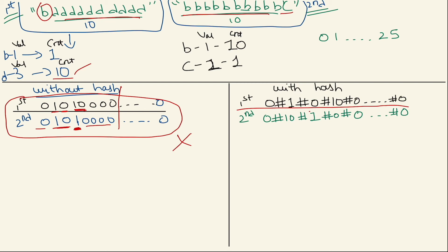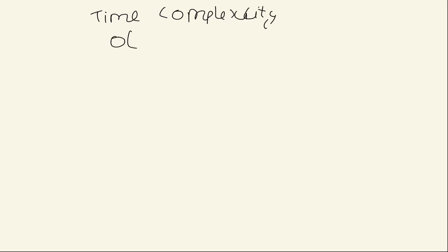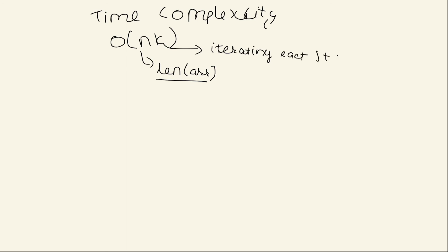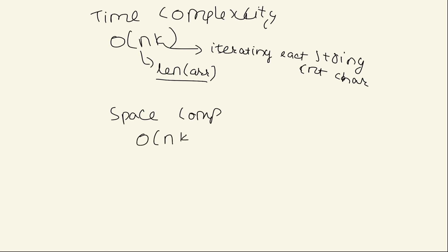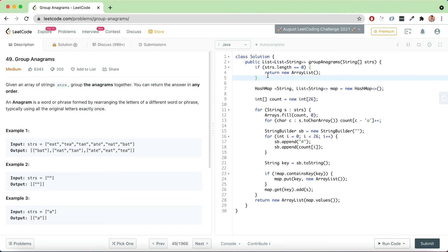Now let's see the time and space complexity. Time complexity is O(n * k), where n is the length of the array of strings — because we iterate over each string — and k is the length of each string for counting characters. Space complexity is O(n * k), which accounts for the total data stored in the map.